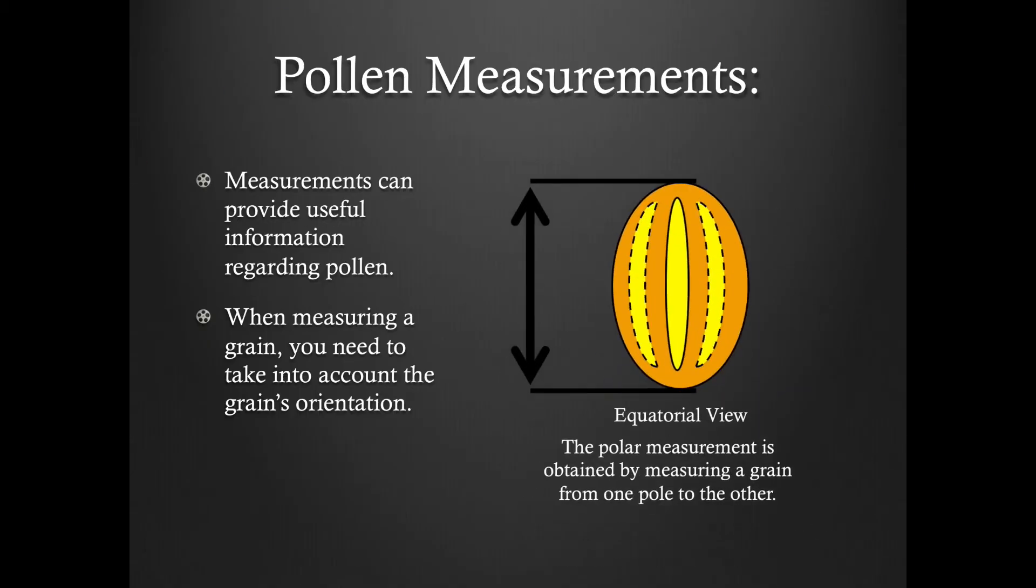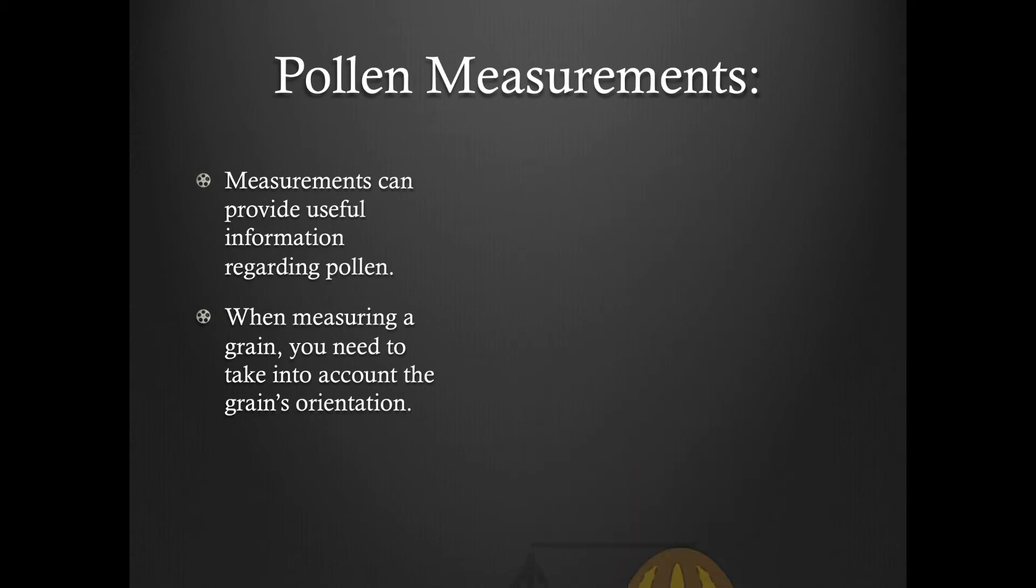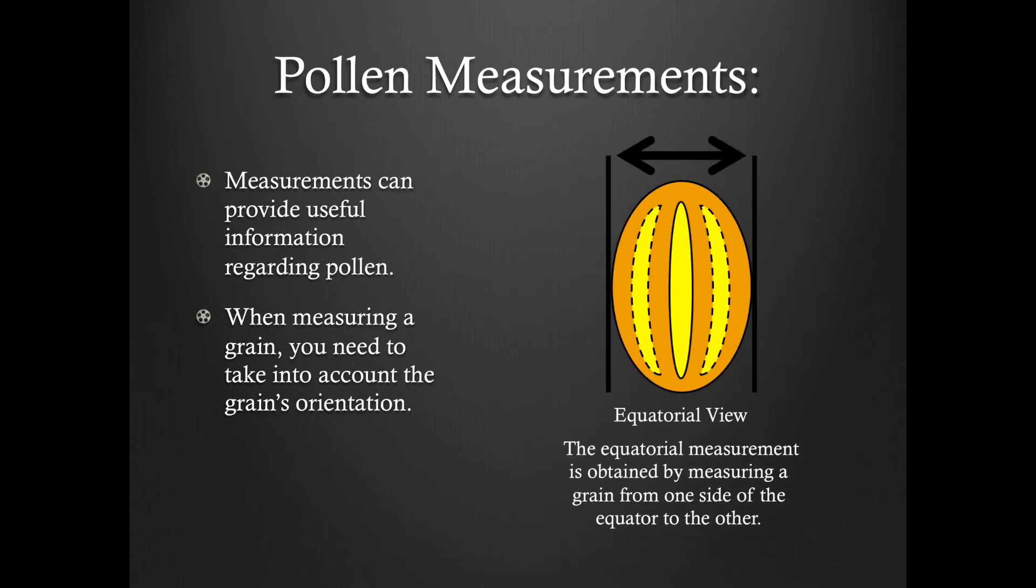For the polar measurement, the grain should be measured from one pole to the other. For the equatorial measurement, the grain should be measured across the equator.